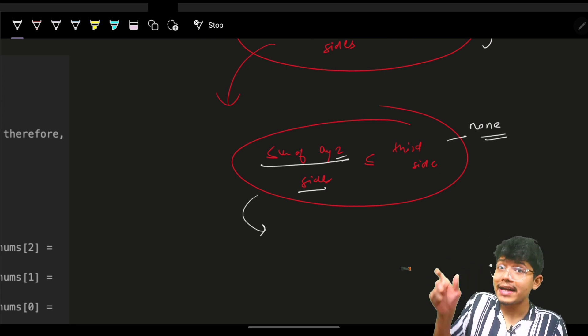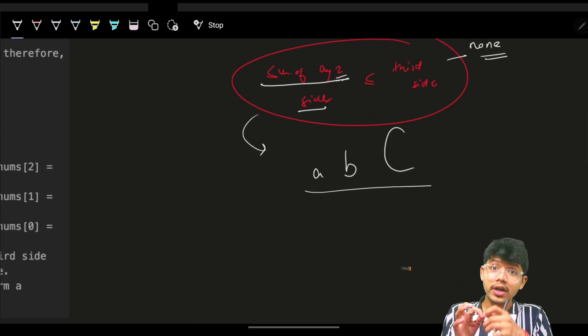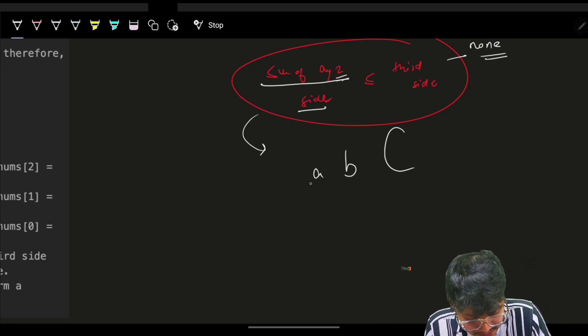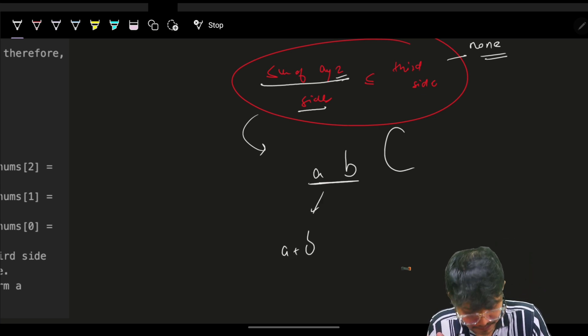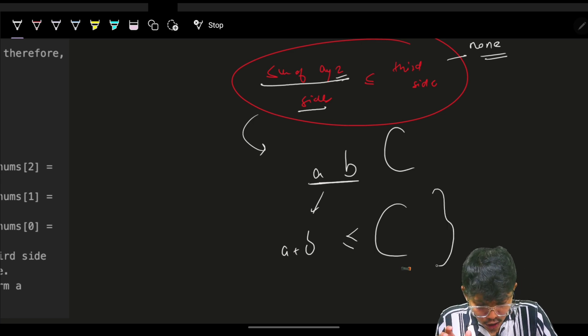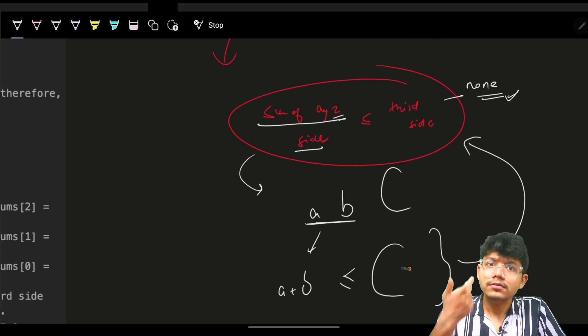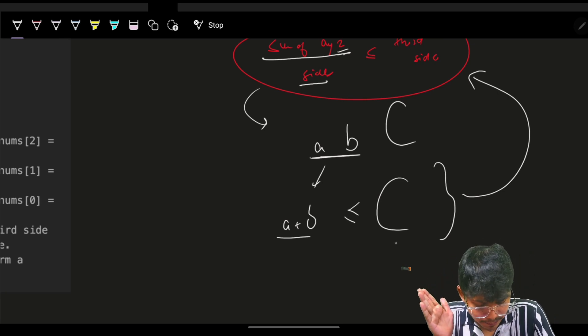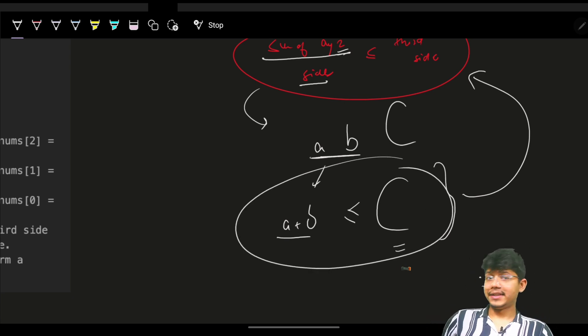What I can do is, I can simply sort my sides in ascending order, which means A, then B, and then C, sorted in the ascending order of their sizes. Now, if the sum of the, I'll take the sum of the minimum two sides, which is A and B. If this itself is less than or equals to my C, because this is the obvious, this is the most obvious case to satisfy this condition, to actually make it a none. If this is true, bro, you are done. Triangle is not possible at all.